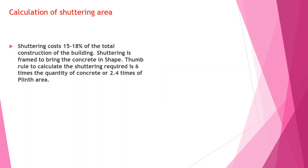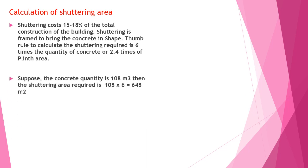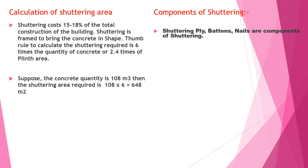Calculation of the shuttering area: shuttering cost is 15 to 18% of the total construction cost of the building. Shuttering is framed to bring the concreting into shape. The thumb rule to calculate the shuttering required is 6 times the quantity of concrete, or 2.4 times the plinth area. Suppose the concreting quantity is 108 cubic meters, then the shuttering area required = 108 × 6 = 648 square meters.